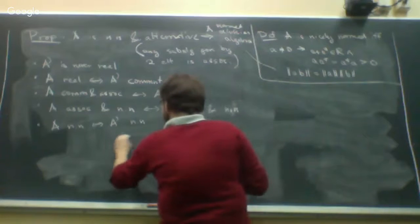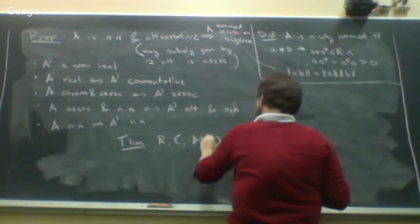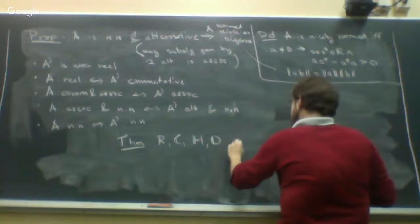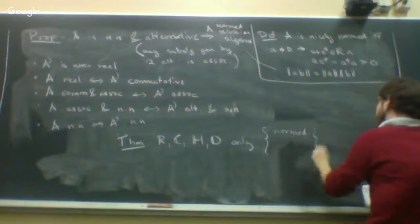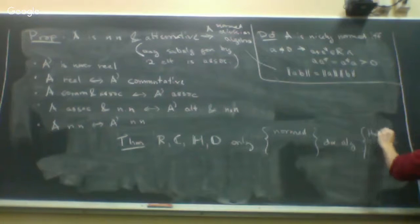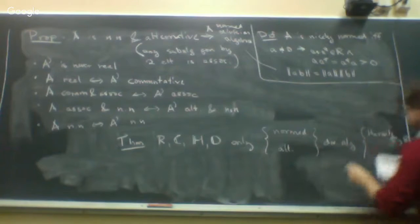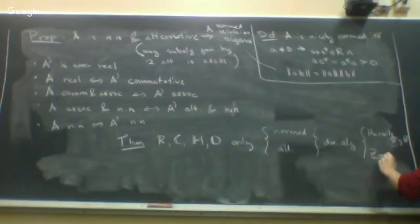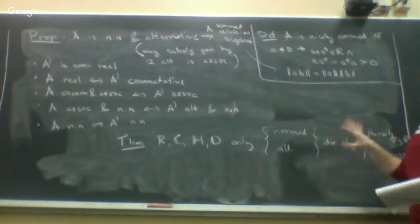Some classical theorems to know: Hurwitz's theorem (1898) says the reals, complexes, quaternions, and octonions are the only normed division algebras. They are also the only alternative division algebras — proved by Zorn, yes, the guy with the lemma, in 1930. So on the algebra level this was known for a long time.